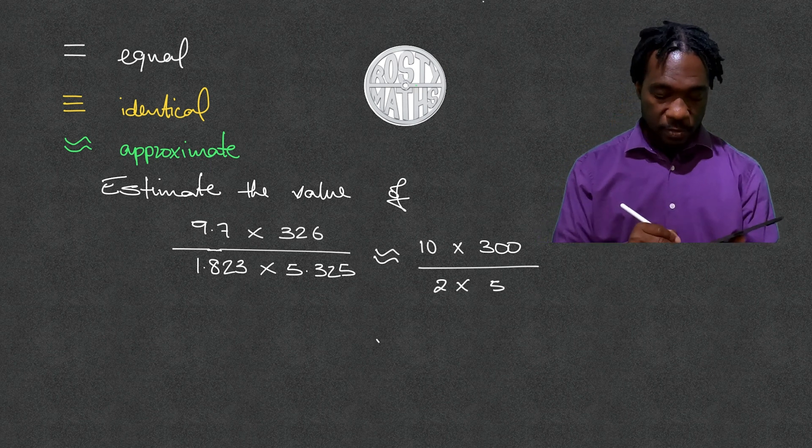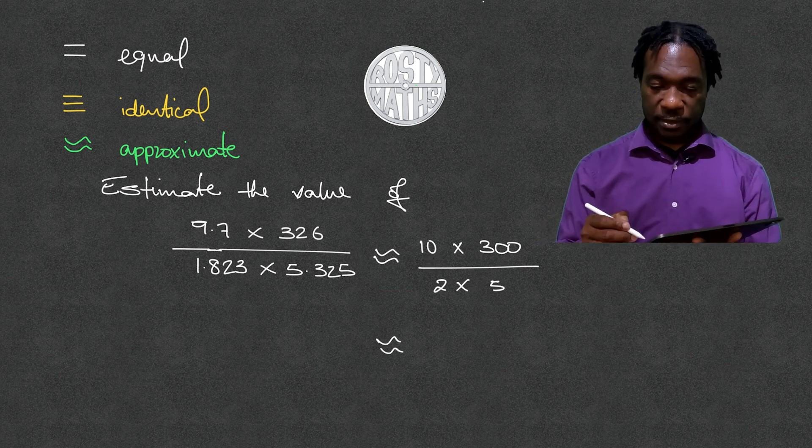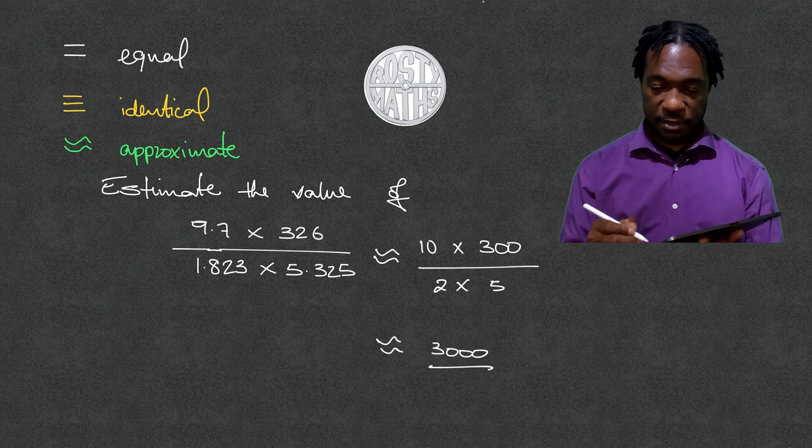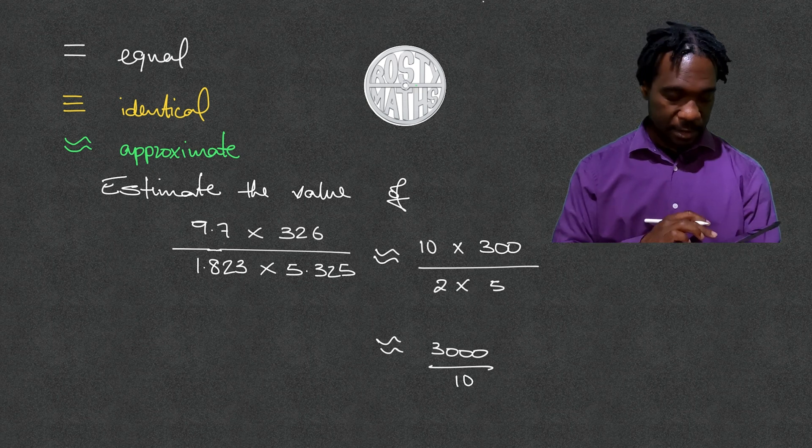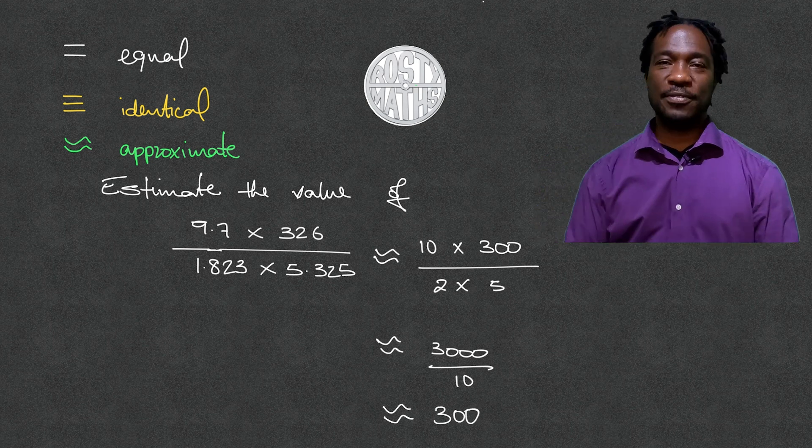Now we put our wavy equal sign again because it's an approximate answer. 10 times 300 becomes 3000, divided by 2 times 5, which becomes 10. So the approximate answer to this is 300, and just like that we are finished.